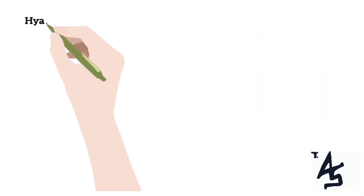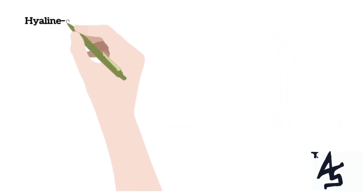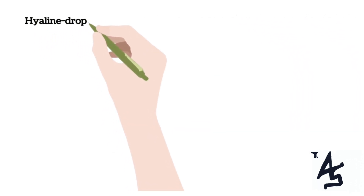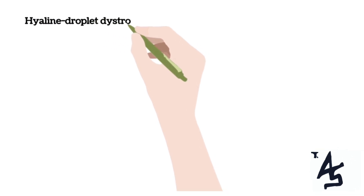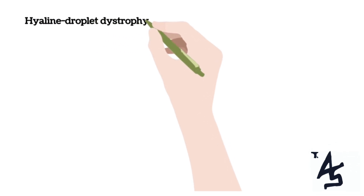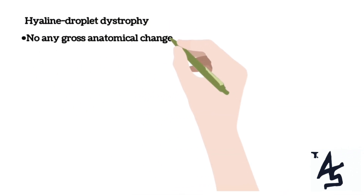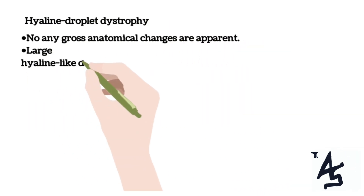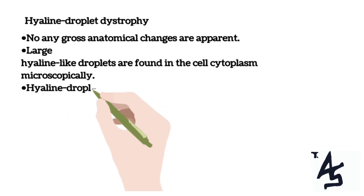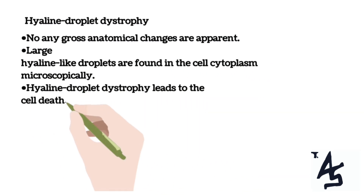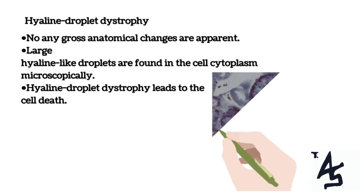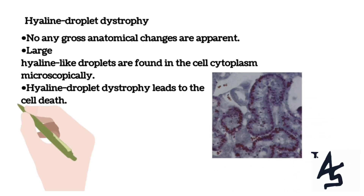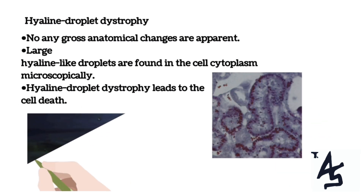Let's first understand two concepts: hyaline droplet and hydropic dystrophy. Beginning with hyaline droplet: first, no gross anatomical changes are apparent. Second, large hyaline-like droplets are found in the cell cytoplasm. Finally, hyaline droplet dystrophy will lead to cell death.